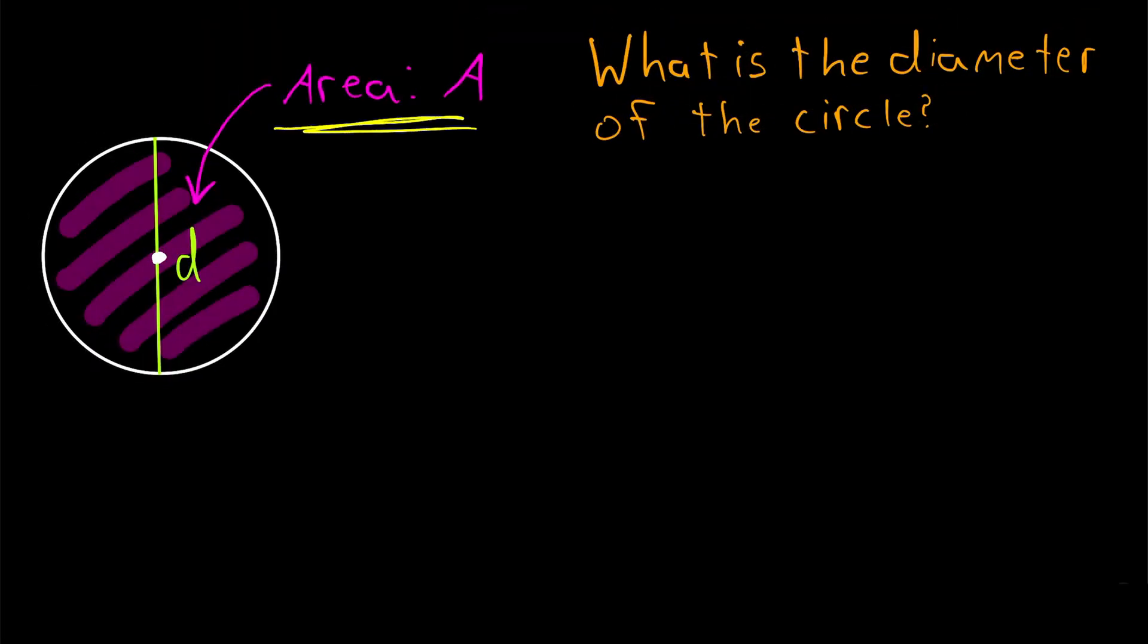Suppose we're given that the area of a circle is A. How do we find the diameter of the circle D given the area? That's what we'll be going over in today's Wrath of Math lesson.